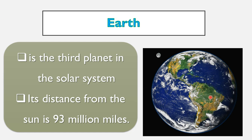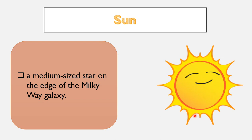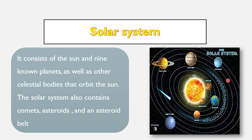Now let's go to the Earth — our home planet. The Earth is the third planet in the solar system, and the distance between the Earth and the Sun is 93 million miles. The Sun is a medium-sized star, not as huge as you might think, and we find it on the edge of the Milky Way galaxy.